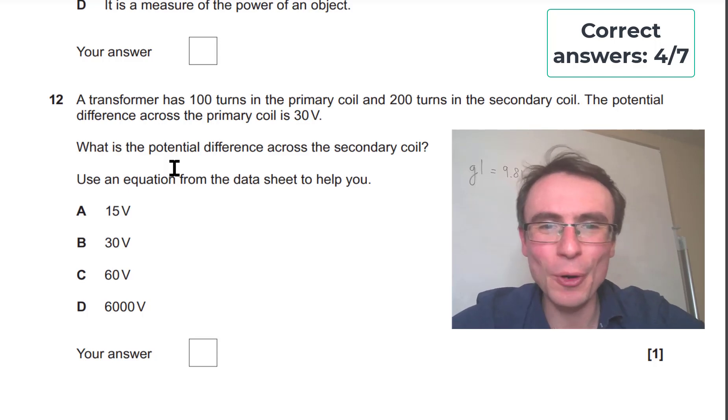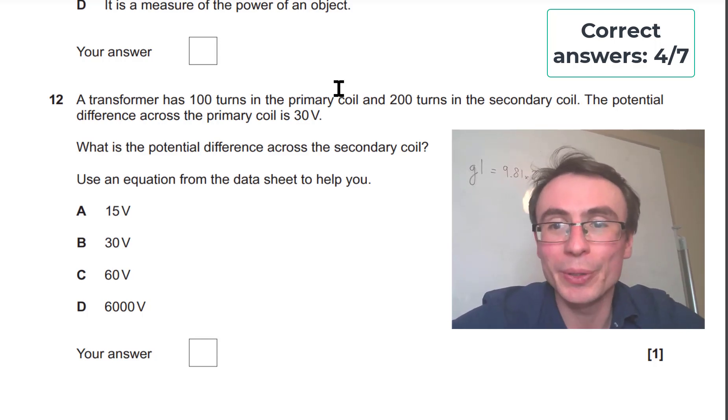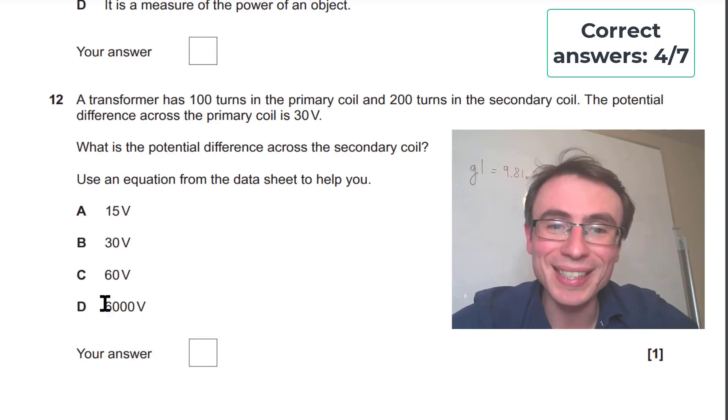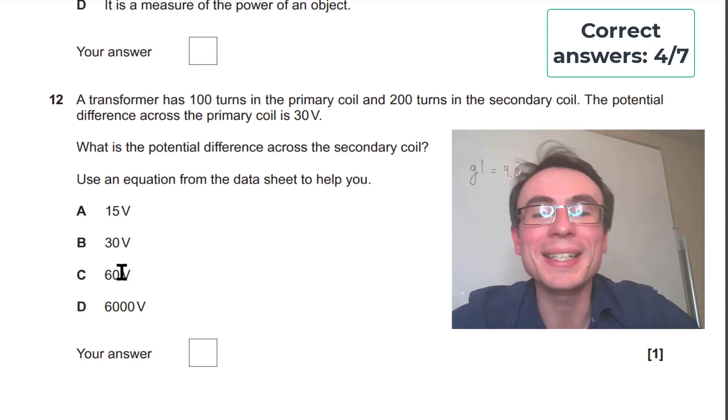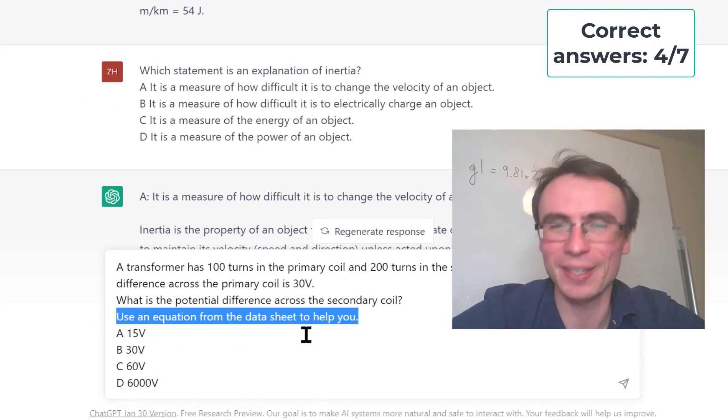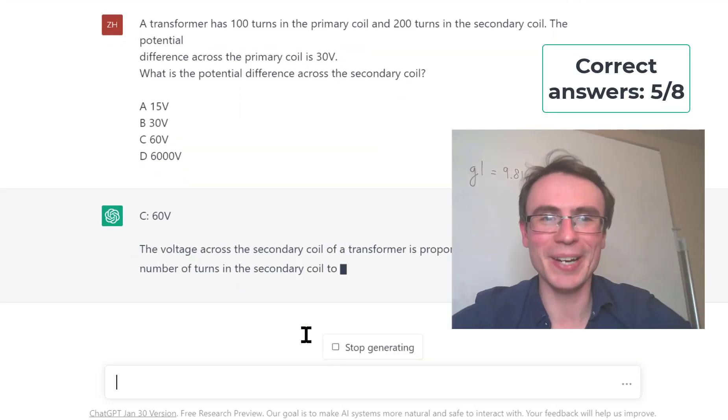We have a transformer that has 100 turns in the primary coil and 200 turns in the secondary coil. So this means that it will be a step-up transformer with a value of 2, meaning that our voltage will double. So if the potential difference in the primary coil is 30, then the potential difference in the secondary coil will be 60 volts. Now ChatGPT does not actually have a data sheet, so maybe I should just remove that statement to try and not confuse it too much. Perfect. Correct.